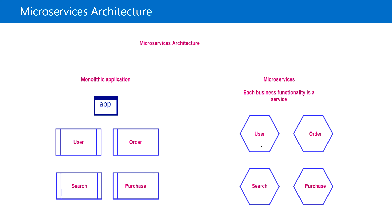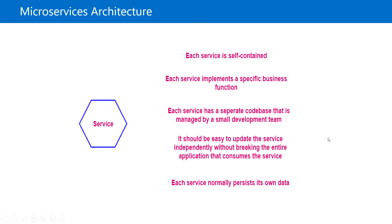Whereas in microservices, each business functionality is a service and all these modules are decoupled. So you can make changes to each of these modules separately, and that won't cause any issues to the other modules. If the customer is searching for a product, they can use the search service, and if they are going to purchase a product, it will contact the purchase module. Even if any one of these services fails, the other modules will still work without any issues.